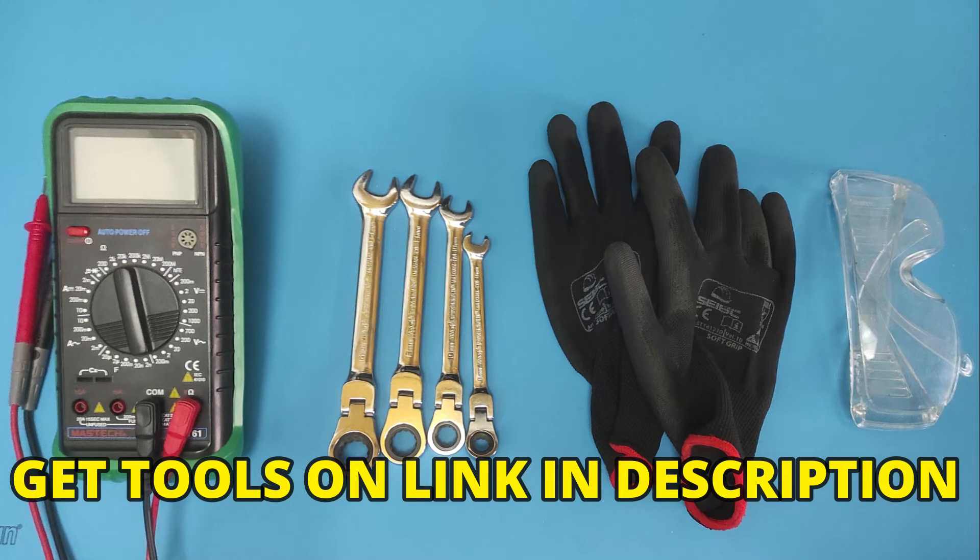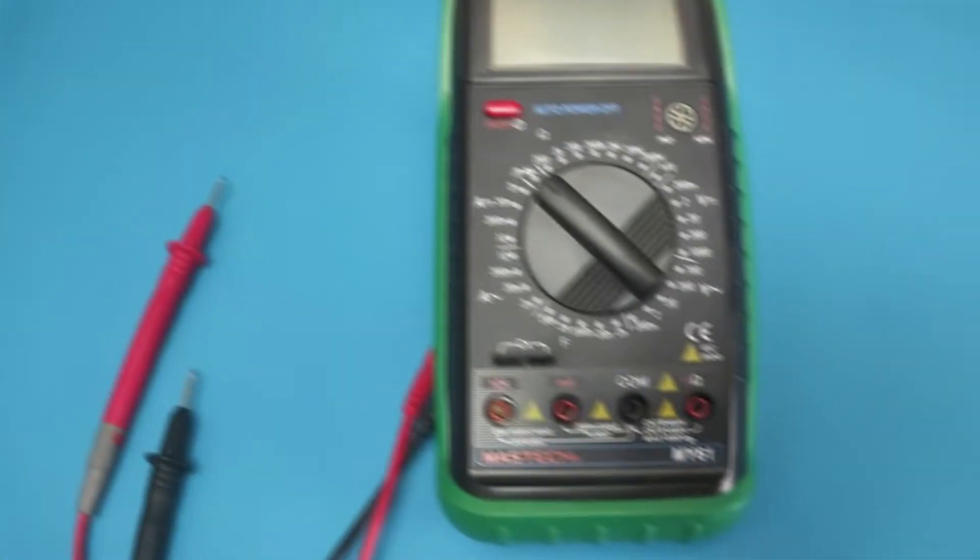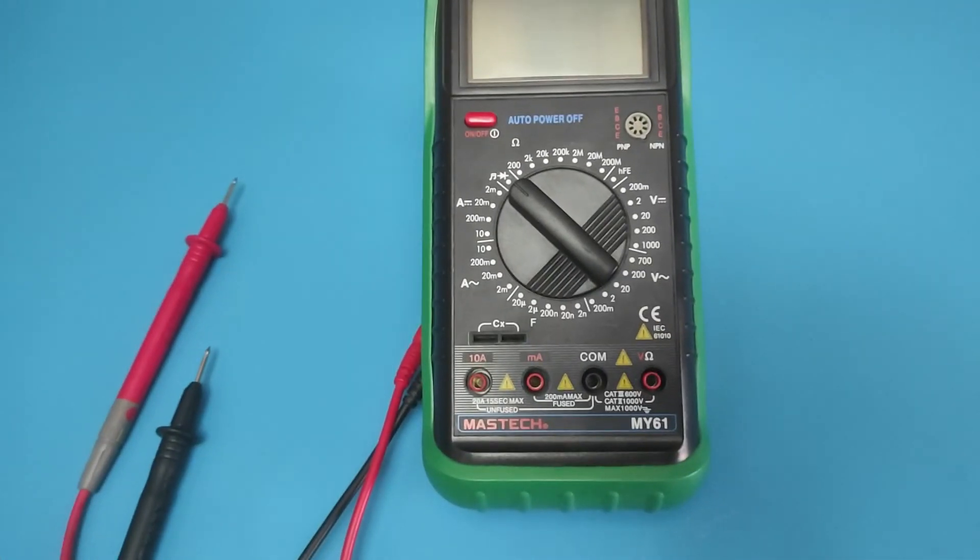You can find all the tools at the link in the description. Once you have removed the spark plugs, the first step is to adjust the multimeter.